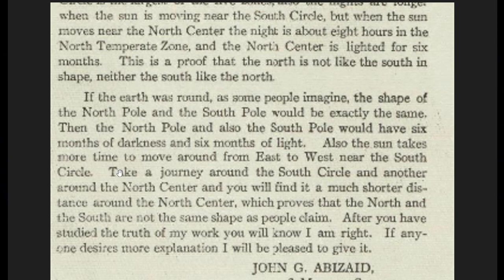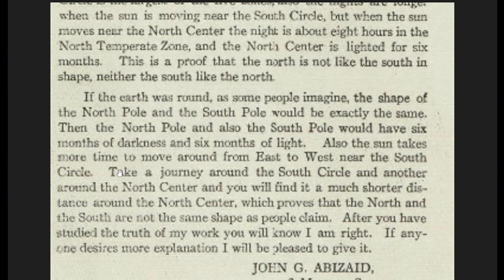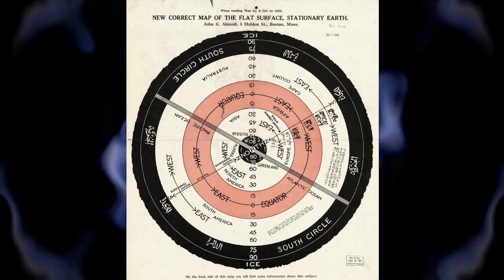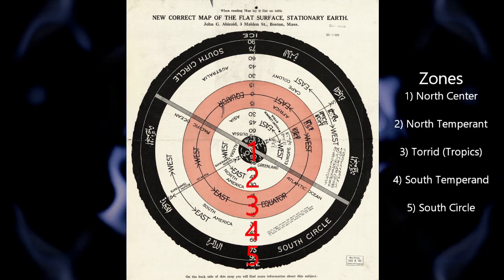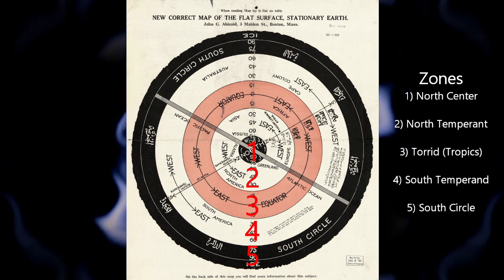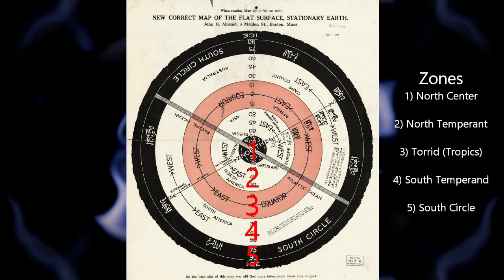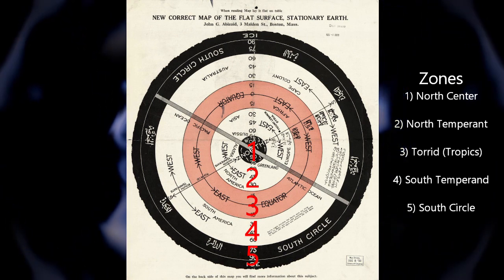We're not allowed to go down that far to maybe prove some of these things, but you can tell just by the temperature differences when you research different areas, which I have. I'm going to make a video on that as well. As John G. Abizade says: "After you have studied the truth of my work, you will know I am right. If anyone desires more explanation, I will be pleased to give it." Hopefully you can appreciate this map as much as I do. The descriptive key breaks it down into five zones really well, and offers that this is a proof that the north is not like the south in shape — which tells you that what they show you that you live on is not correct.